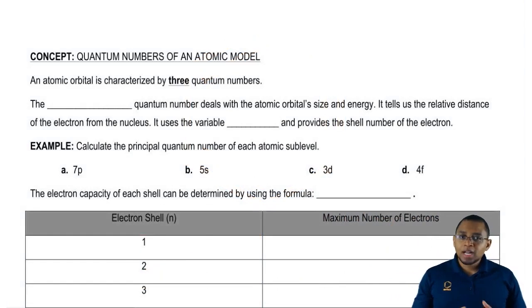When it comes to an atomic orbital or an electron orbital, we talk about three quantum numbers. Now, the thing is there are four quantum numbers. It just happens to be that the first three only talk about the atomic orbital.